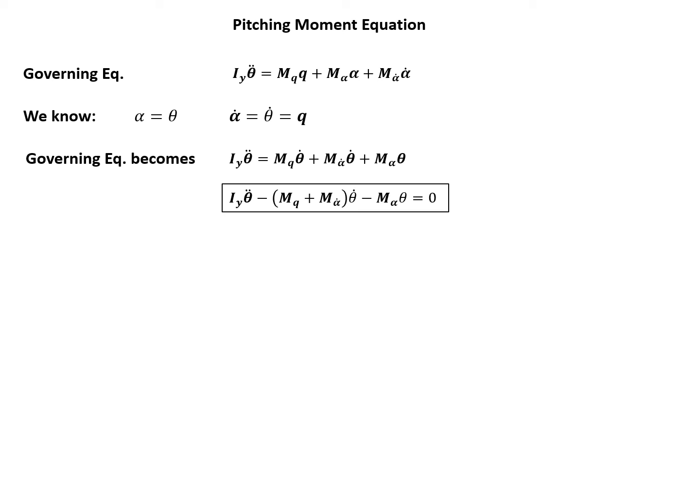So we've derived the governing equation for the short period pitching oscillation or the pitching moment equation, and we know the change in vertical velocity can be replaced by the change in alpha, so we can rewrite the governing equation into this form. And also we know alpha equals theta, and Q is a pitching rate, and then the governing equation becomes like this, and we're happy to see this because the terms are all related with theta.